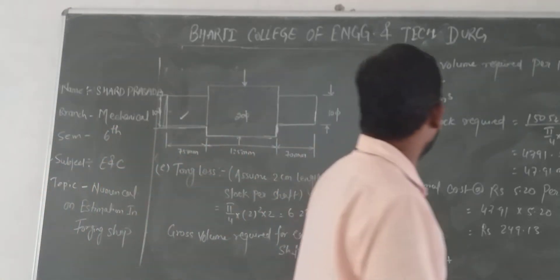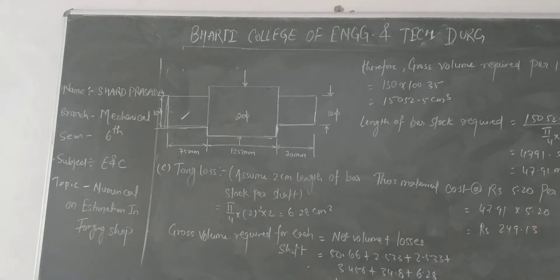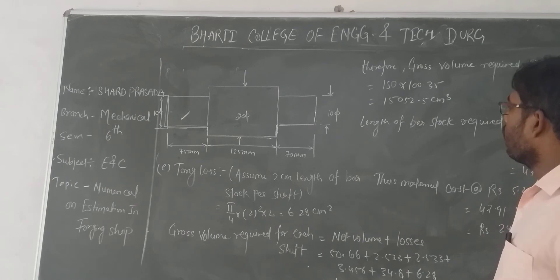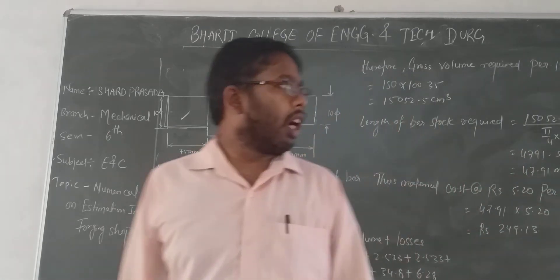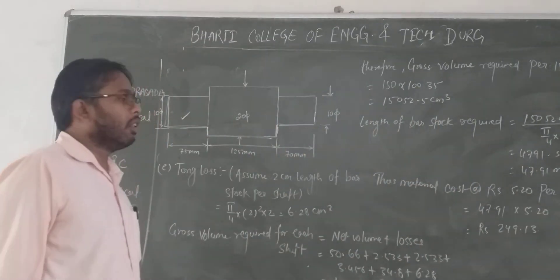Gross volume required for 150 shafts: 150 × 100.35 equals 15,052.5 cm³.